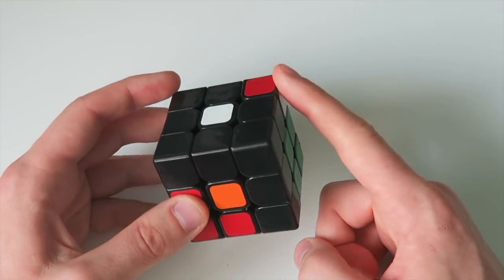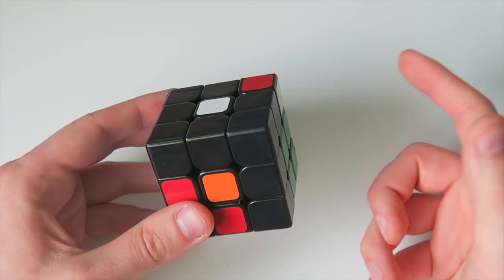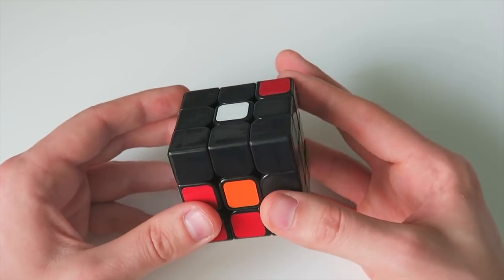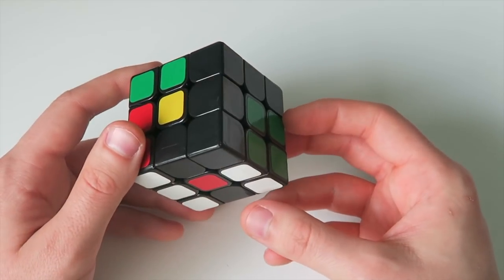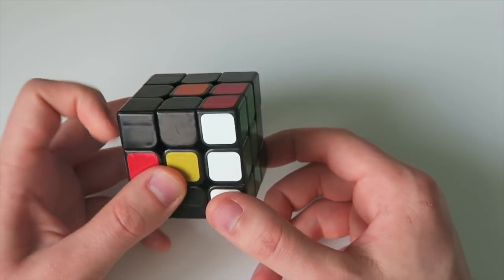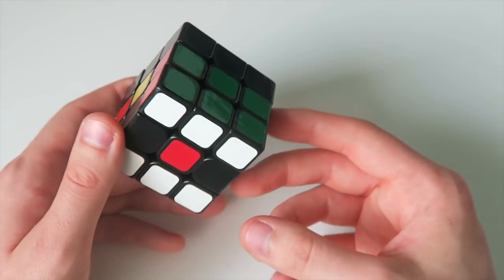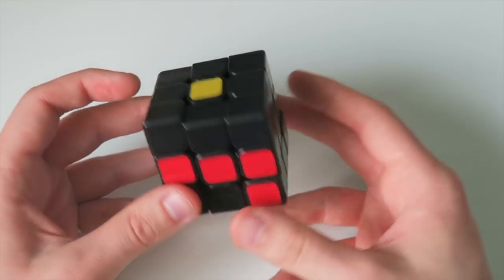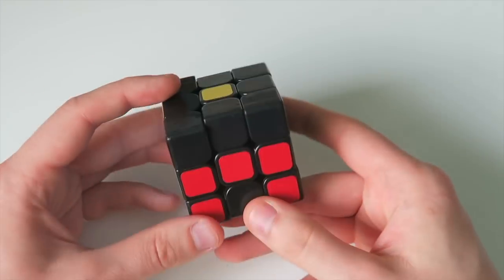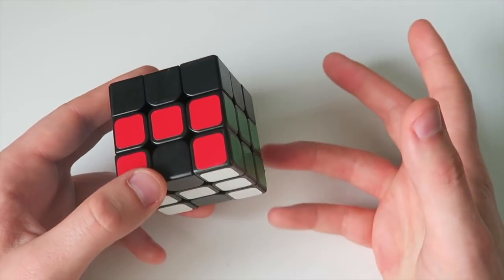And then, for this piece, these two, we want to pair them up as well, obviously. I think the fastest way to do that would be a U2M. And then, I think we just have to put them in with an R U prime R prime. And that's that. And then, obviously, the centers don't have to be solved at this point, but there we go. The Roux cube is solved.